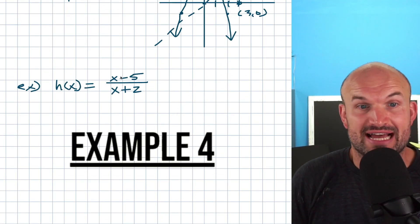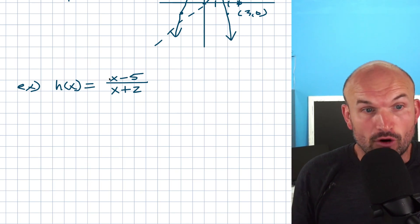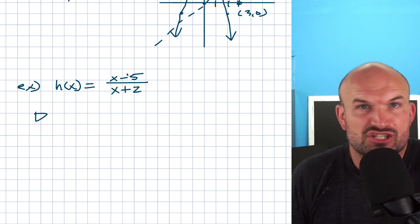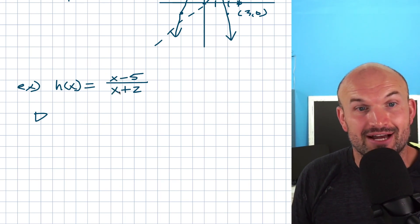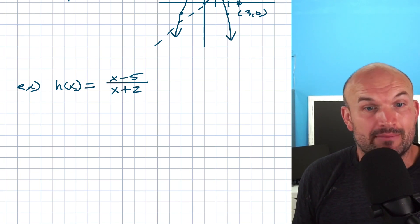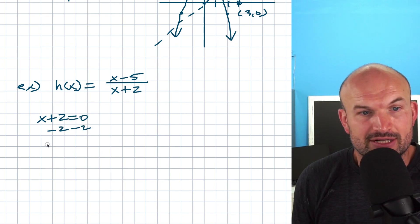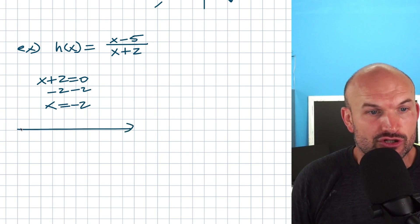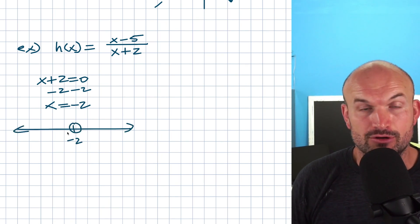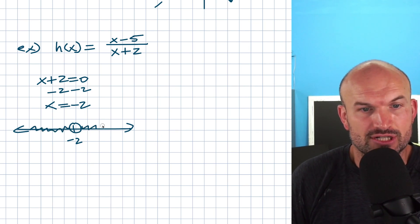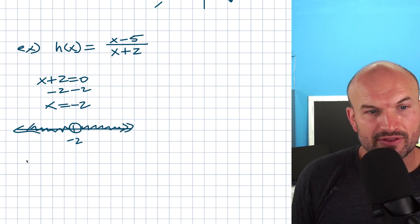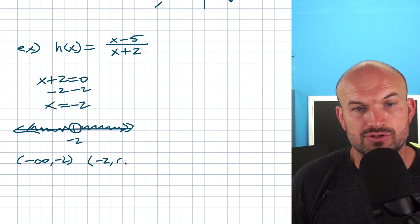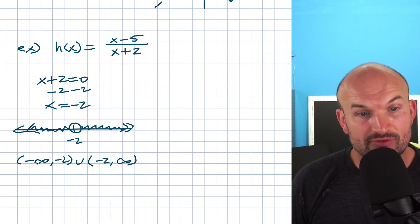Now let's look at h(x) = (x − 5)/(x + 2). To find the domain, focus on restrictions: there are no restrictions in the numerator — we can plug in anything and subtract 5. However, we can't divide by zero, so we find the values that make the denominator zero: x + 2 = 0 gives x = −2. That value is not in the domain. On a number line, the function is defined everywhere except x = −2, so the domain is (−∞, −2) ∪ (−2, ∞).